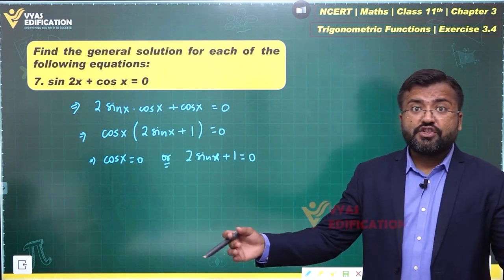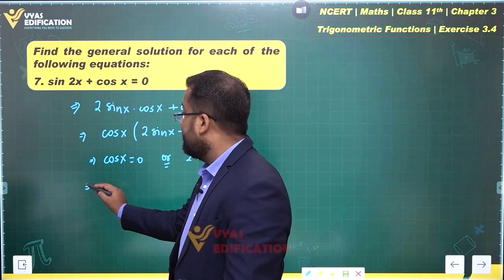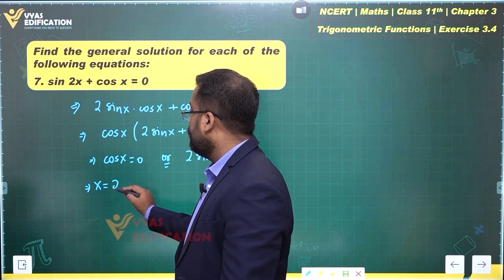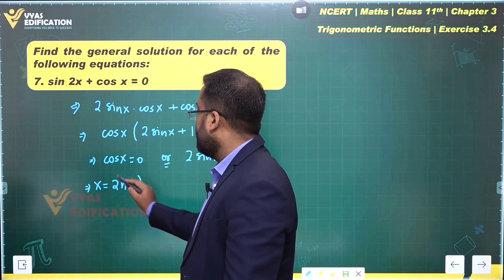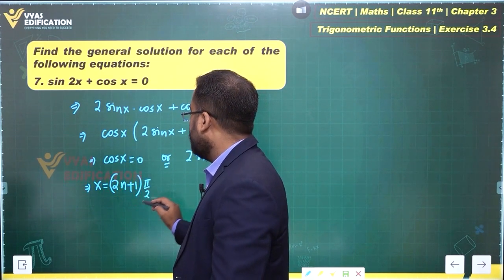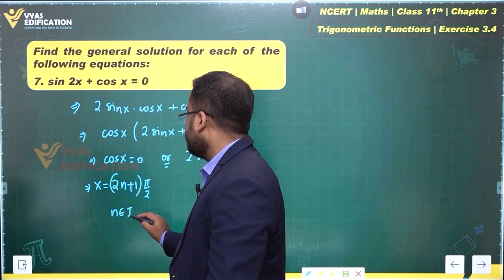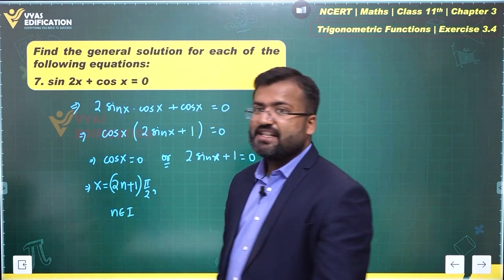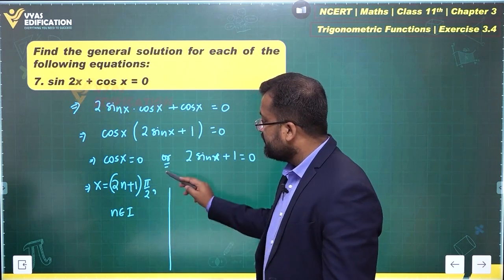What happens to this cos x equals 0? This implies that x will be equal to 2n plus 1 pi by 2 where n belongs to integer. This is the solution for cos x equals 0.